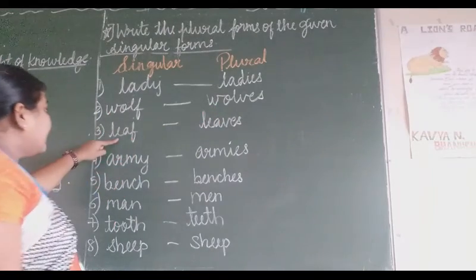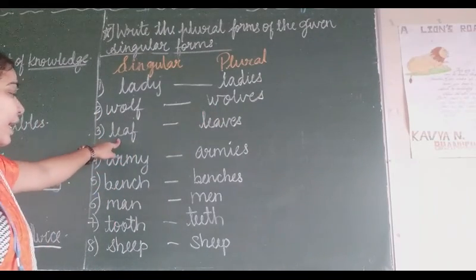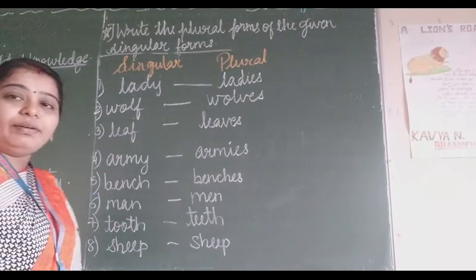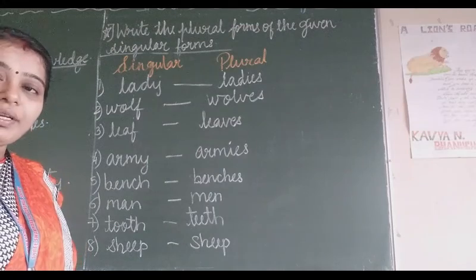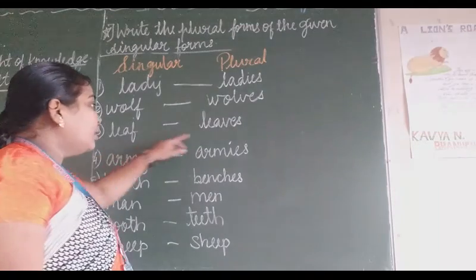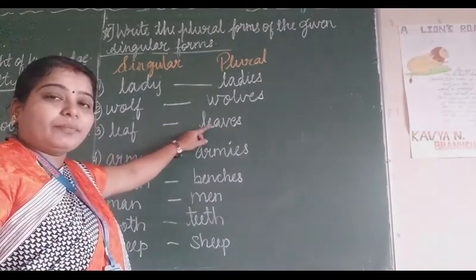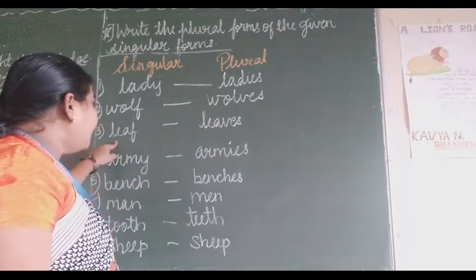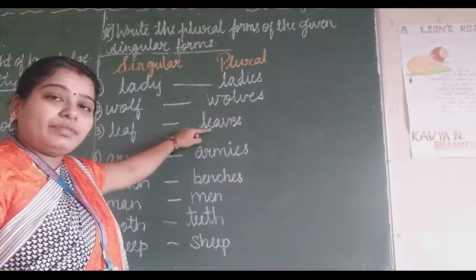Then next, 'leaf' — L-E-A-F. In place of F we will write V-E-S. So 'leaf' becomes 'leaves'. Leaf — leaves.